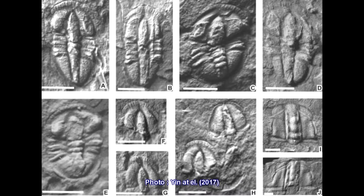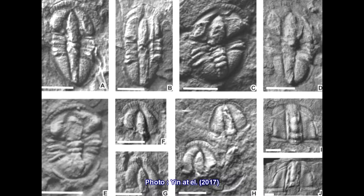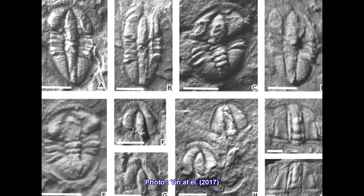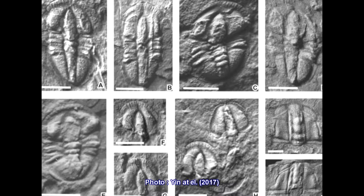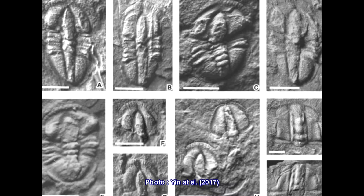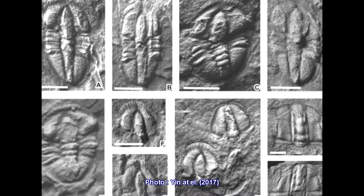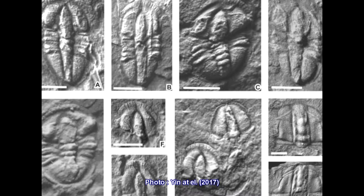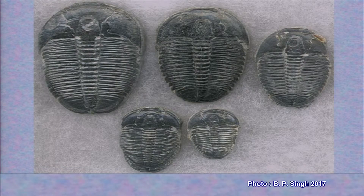We all know that at the end of the Permian period, trilobites became extinct. Here are some trilobite fossils being shown. The age ranges from Cambrian to Permian, at the end of which they became extinct. The fossils from Paradoxide, Calamine, Philipsia, and Olenus can be identified.